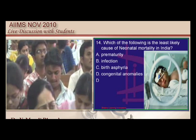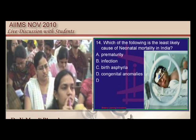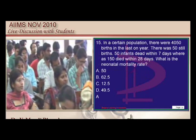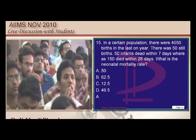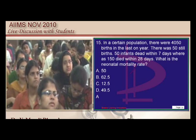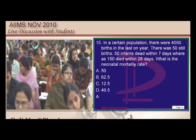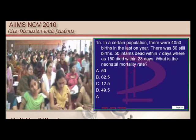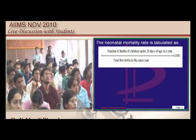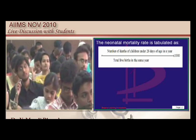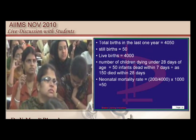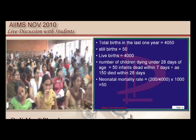For neonatal mortality, birth asphyxia, infection and prematurity are generally responsible; congenital anomalies are the least common etiology. Now a calculation: 4050 births, 50 stillbirths, 50 died in first 7 days, 150 died within 28 days. For neonatal mortality the denominator is live births — 4050 minus 50 equals 4000 live births. Deaths within 28 days: 50 plus 150 equals 200. So 200 divided by 4000 multiplied by 1000 equals 50 — that is the neonatal mortality rate.